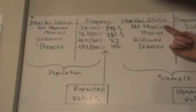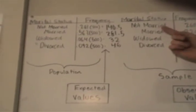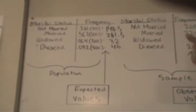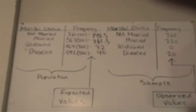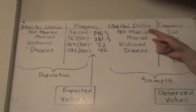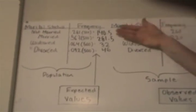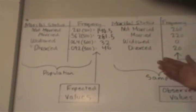So, in other words, 28.1% of the population, the entire population of U.S. males aged 25 to 29, there was 28.1% that were not married. So we're just applying that to the sample size of 500.